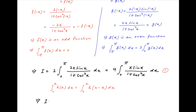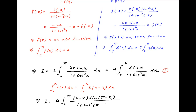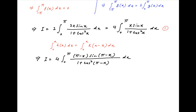Using this result, the integral I can be expressed as 4 times the integral from 0 to pi, replacing x with pi minus x in the integrand. So we get pi minus x times sin(pi minus x) divided by 1 plus cos squared(pi minus x). Since sin(pi minus x) equals sin x and cos(pi minus x) equals minus cos x, we get I equal to 4 times the integral from 0 to pi of (pi minus x) times sin x in the numerator and 1 plus cos squared x in the denominator dx.